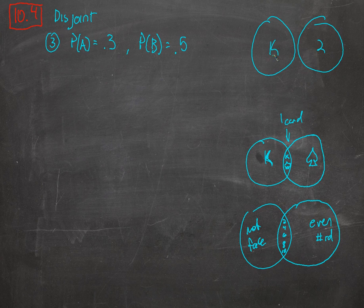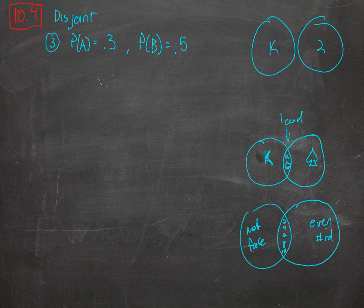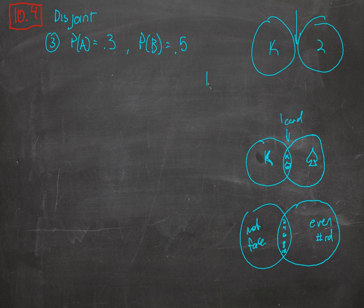So when it says 'this and that,' it means king and spade, or not-face and even — two, four, six, eight, and ten are all those. If they're disjoint, then there's no overlap, which the shortest way to say that is: the probability of A and B — meaning that this one event is two things at once, is a king and a spade, is a not-face card and an even number — if it's disjoint, the probability of A and B is zero.